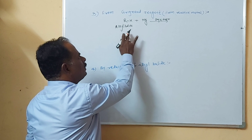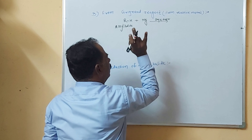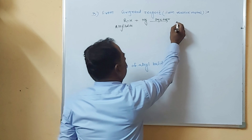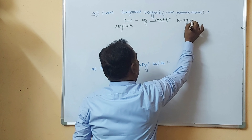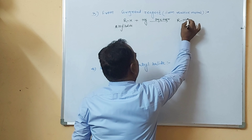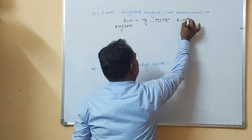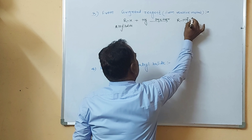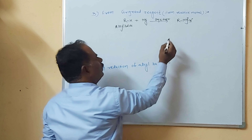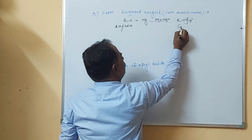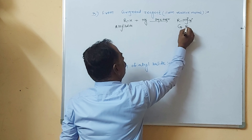When alkyl halide is treated with magnesium in presence of dry ether, the magnesium metal forms a bond with the alkyl group as well as the halogen atom. The halogen donates electrons to the halogen atom; therefore magnesium acquires a positive charge and X acquires a negative charge. This compound is called the Grignard reagent, abbreviated as GR.